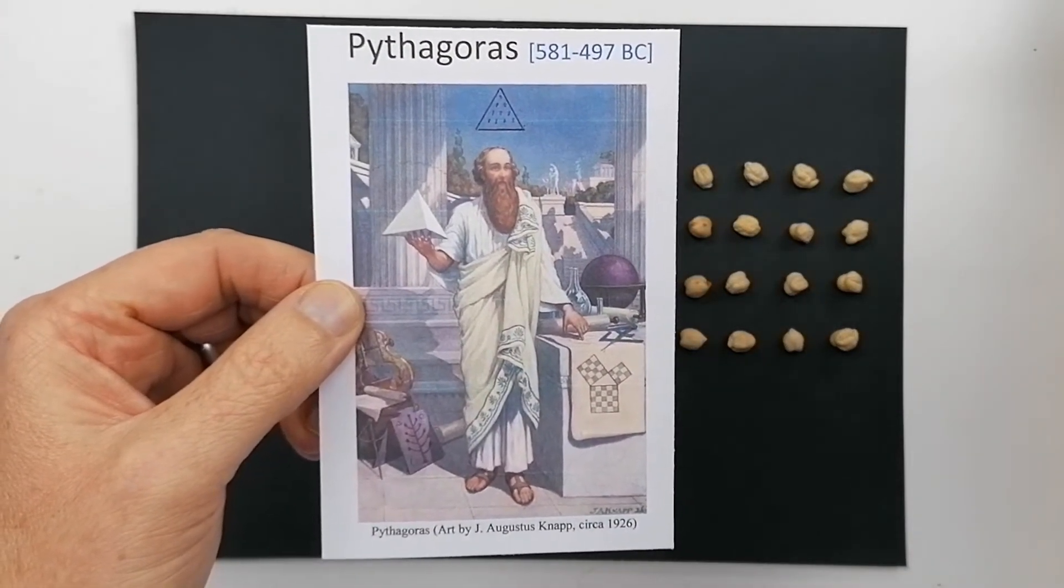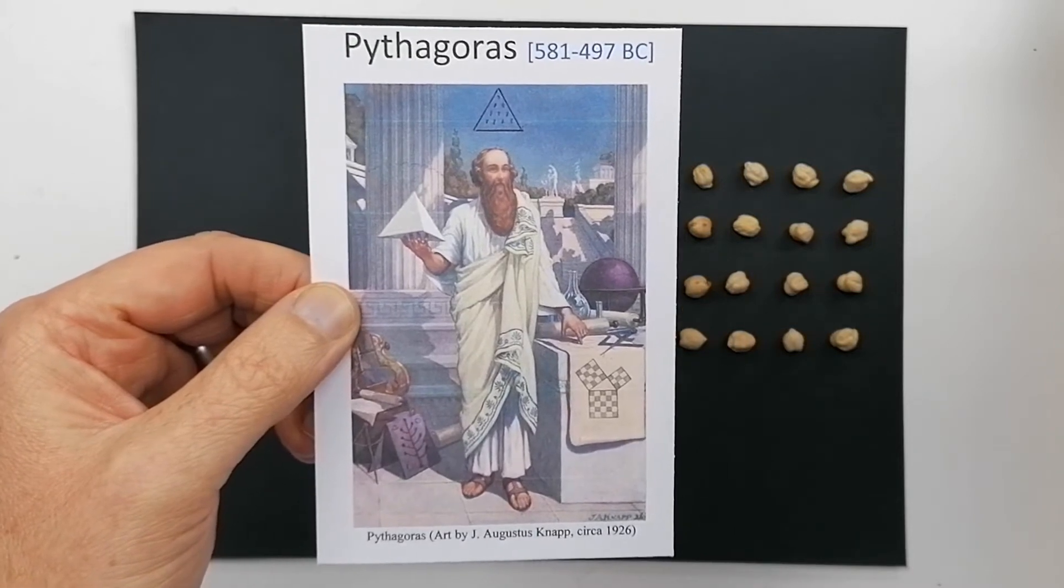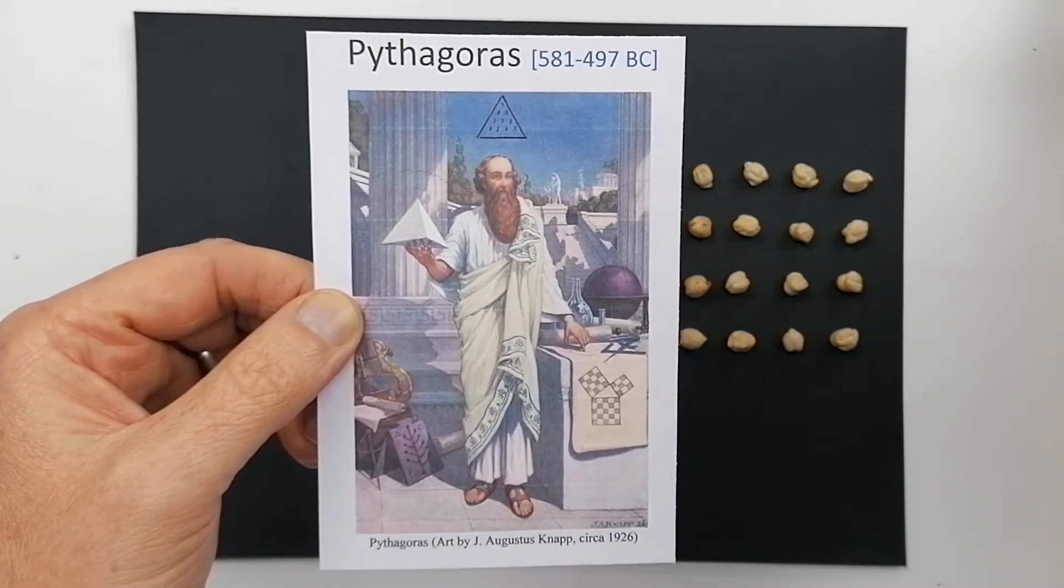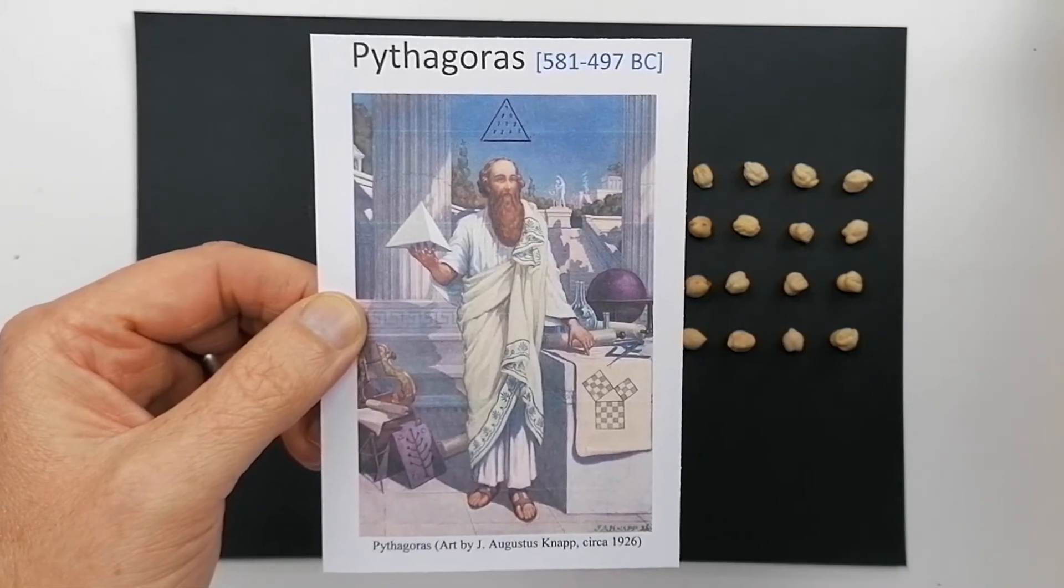He lived about two and a half thousand years ago in Greece, and he is very famous these days for his theorem. He didn't actually discover that theorem, but he made it very popular.